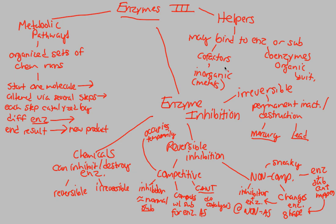Overall, we've concluded our discussion on metabolism by looking at metabolic pathways — simply going from one molecule to a new, more complex molecule through several steps catalyzed by enzymes. We also looked at enzyme inhibition in great detail: reversible inhibition contains competitive and non-competitive inhibition, while irreversible inhibition involves permanent inactivation or destruction by chemicals like mercury and lead. Finally, we talked about helpers — coenzymes like vitamins and cofactors like iron, magnesium, and zinc — that bind to enzymes or substrates. That concludes our lecture series on Lecture 7, Metabolism.